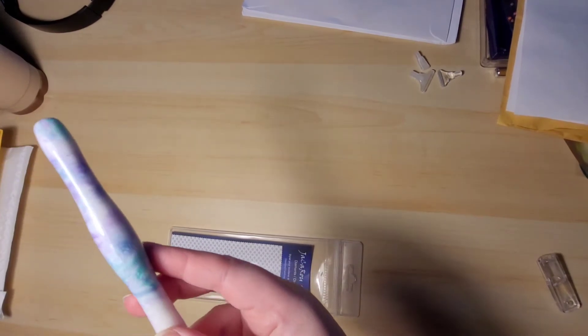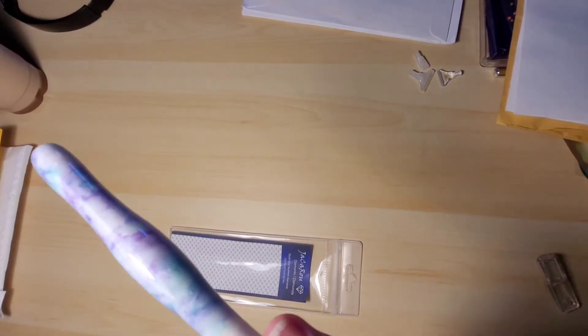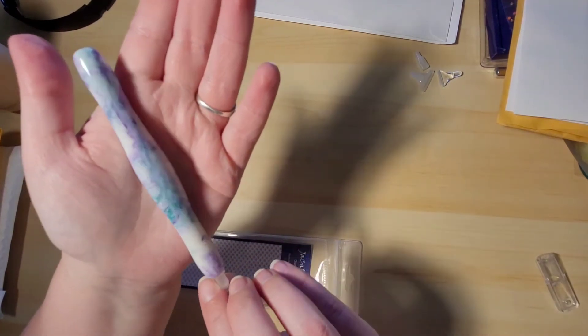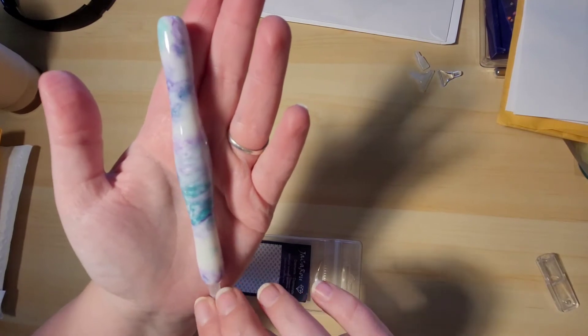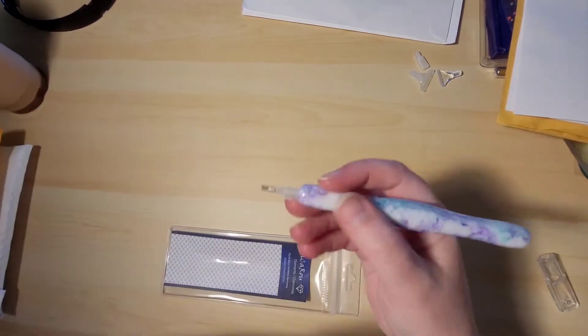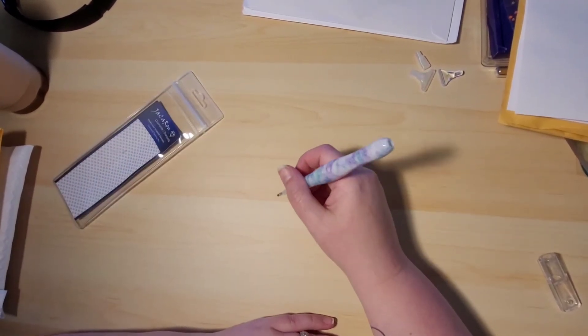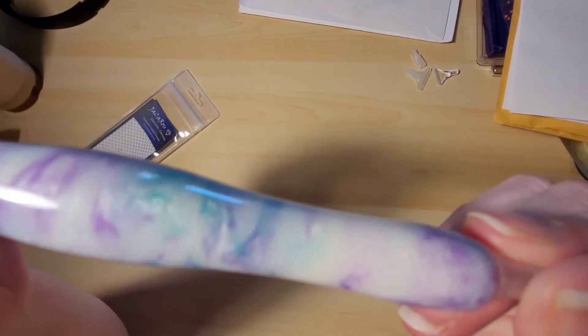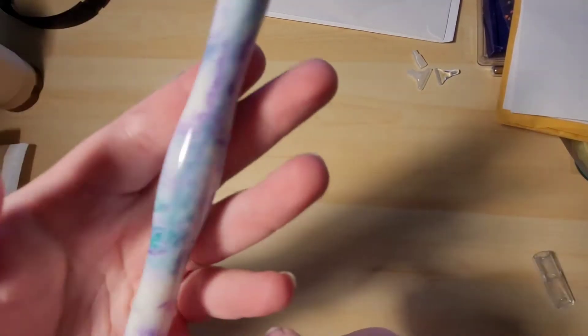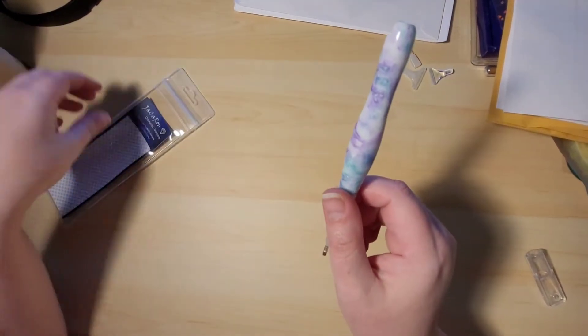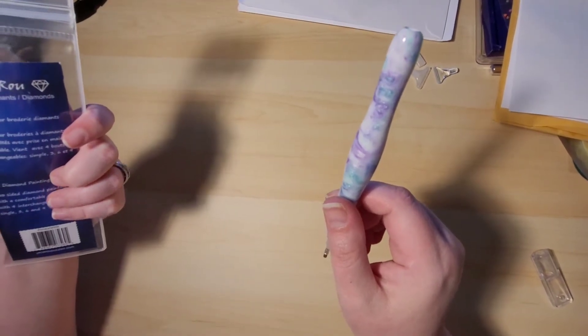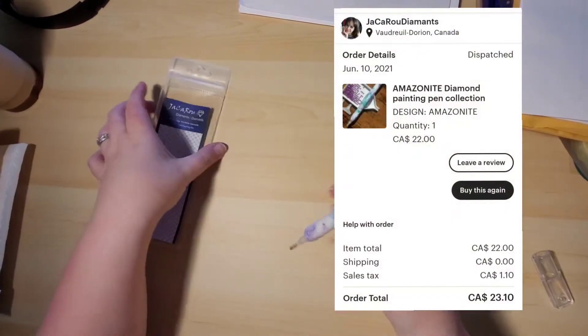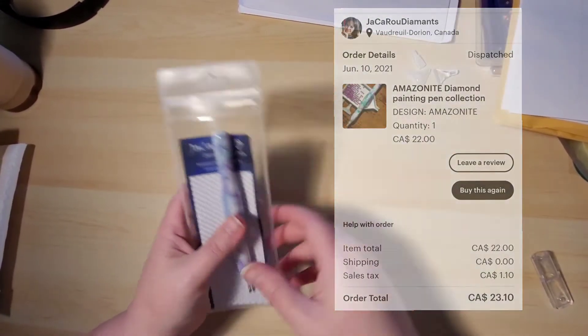This is what I really love. Look how gorgeous this is. You see the pretty colors? It's like purple and white and blue and it's all cloudy and pearly. So pretty. And it's nice. It's light, so it's not too heavy. This one was from Jackaroo diamond painting over on Etsy.